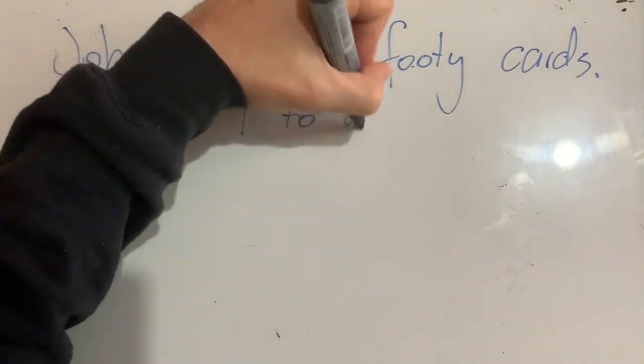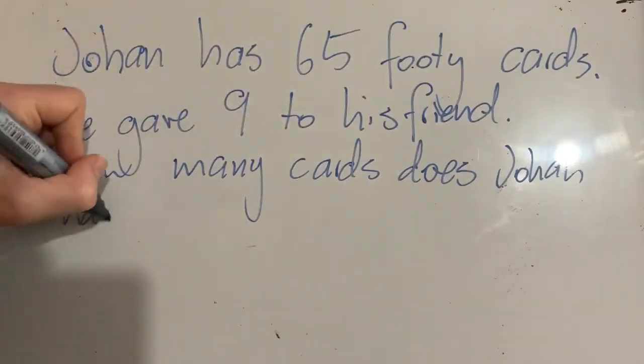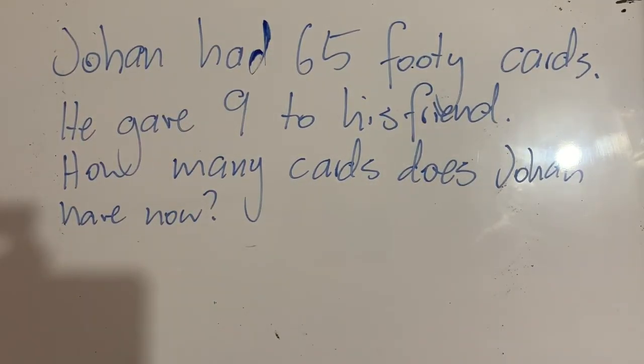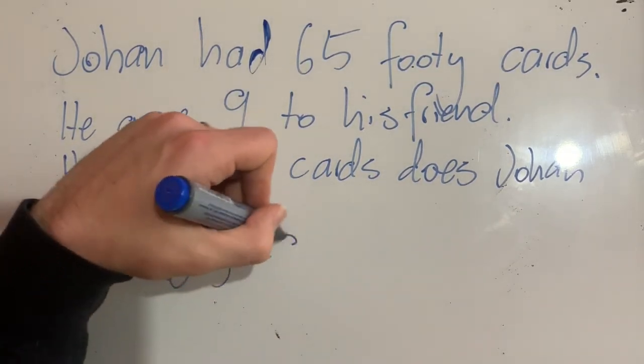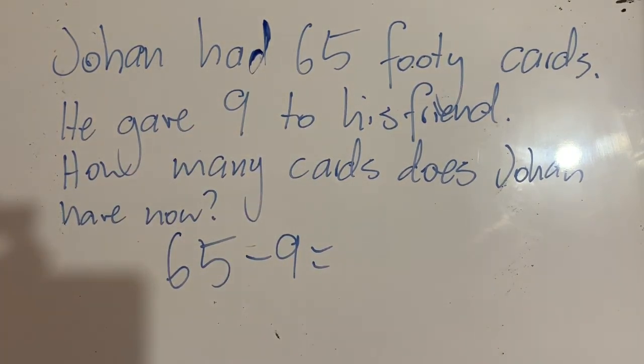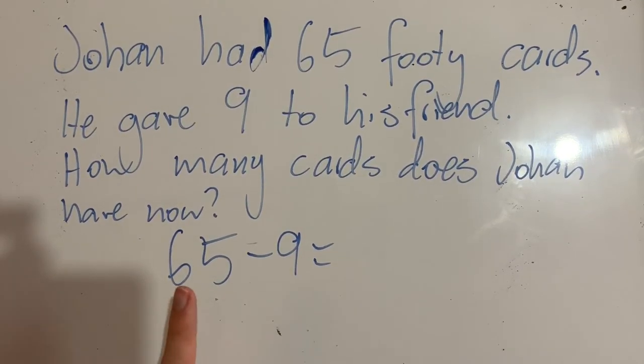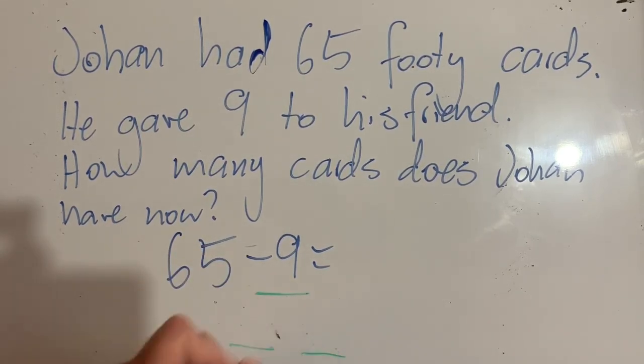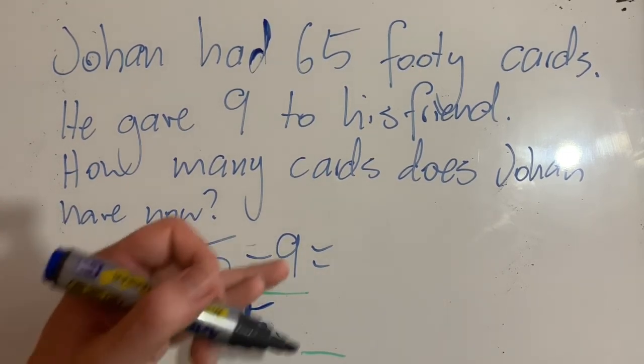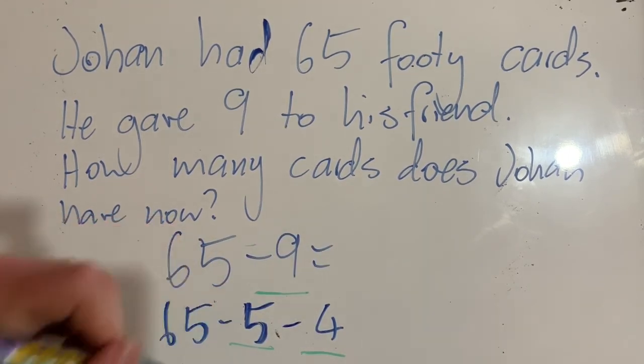Let's do a worded problem. Johann had 65 footy cards. He gave 9 to his friend. How many cards does Johann have now? So he starts with 65. Then he takes away 9. I want to find what happens when I take 9 away from 65. I could count backwards—that's not the most efficient strategy though. I'd like to get to a multiple of 10, so I need to take 5 away. So I need to split 9 into 2 numbers, one of which will be 5. So I'll split 9 into 5, because I need to take 5 away from 65 to get to 60, and the difference, the leftovers, will be 4.